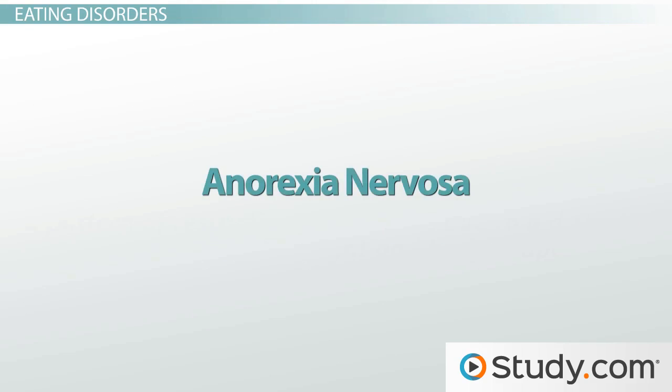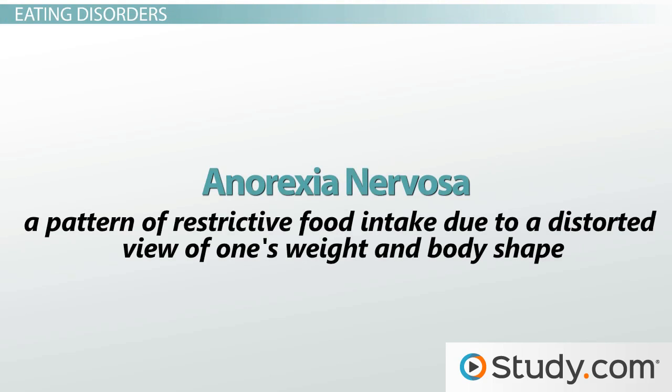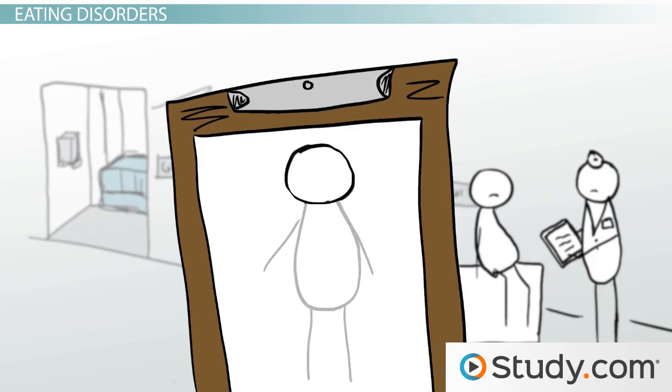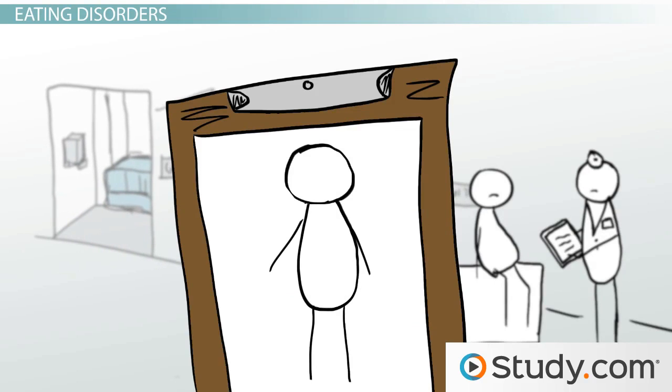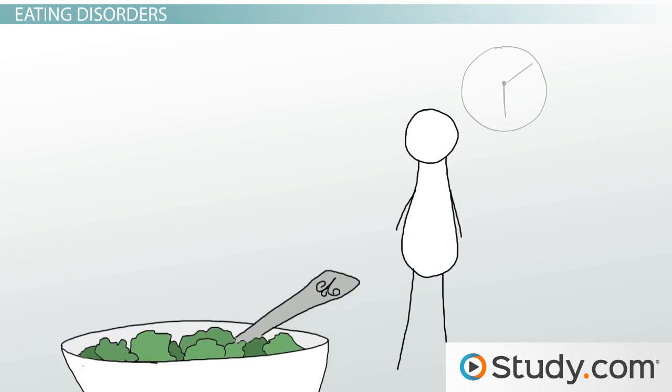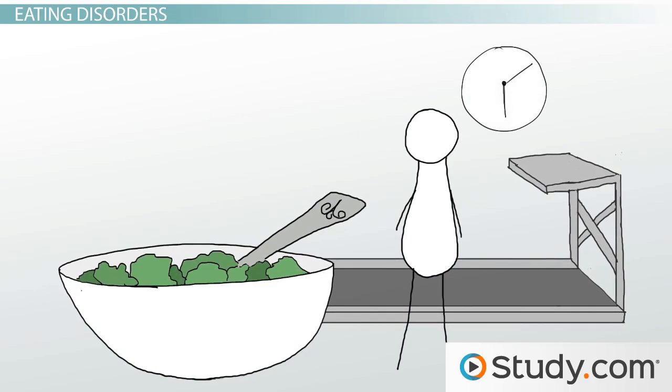Anorexia nervosa is defined as a pattern of restrictive food intake due to a distorted view of one's weight and body shape. This disorder is marked by high anxiety and a reduction in body mass to dangerous levels. The individual restricts calories or finds ways of burning off what they do take in to dangerous thinness.